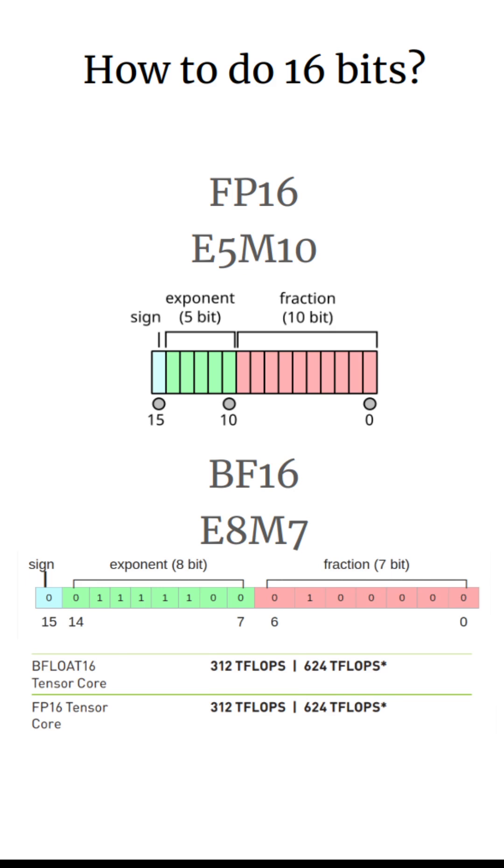It's not that one of these methods is faster than the other. We can see that on an A100, they both have the same peak throughput. The difference is that brain float is better at representing the rough scale of the numbers, while FP16 is better at representing the numbers themselves.